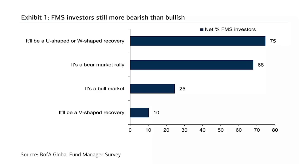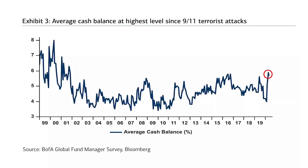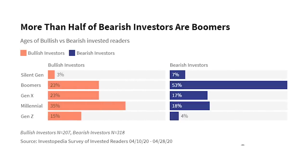One out of four fund managers believes it's a bull market — that's a pretty brave position. The next chart shows the average cash balance held by fund managers, and you can see it's at its highest level since the 9/11 attacks. Essentially, a lot of people are keeping their powder dry — another sign of pessimism. The third chart I want to show comes from Investopedia, and it shows that right now bearish investors tend to be older — the boomer generation — while bullish investors tend to be clustered in the millennial and Gen X generations.